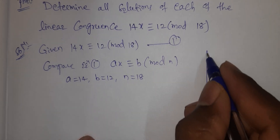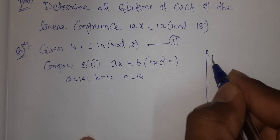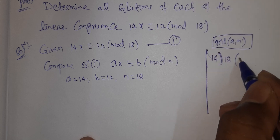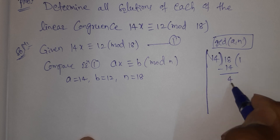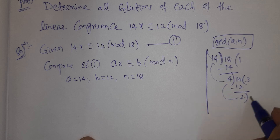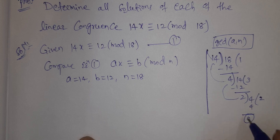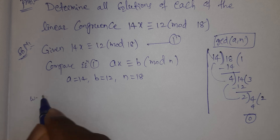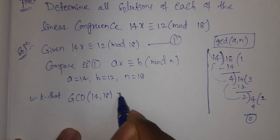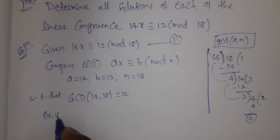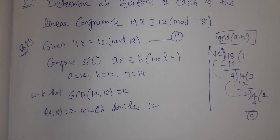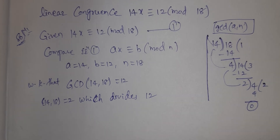Now find the GCD of a and n — that is, gcd(14, 18). Working through: 18 = 14·1 + 4, then 14 = 4·3 + 2, then 4 = 2·2 + 0. So gcd(14, 18) = 2, which divides 12. The GCD condition is satisfied.